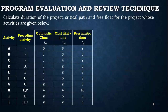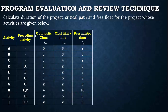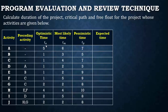We are going to use Program Evaluation and Review Technique to solve a problem to find the duration of the project, critical path, and free float. The project activities are given in a table: the first column represents the activities, the second column shows the preceding activity indicating the interrelationship between activities, and the third, fourth, and fifth columns represent optimistic time, most likely time, and pessimistic time.